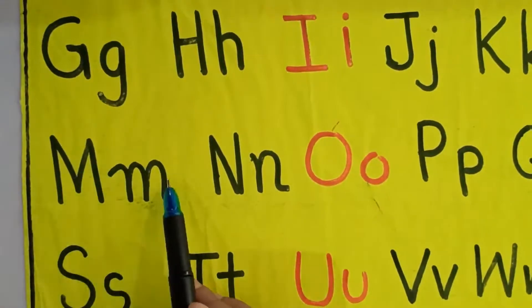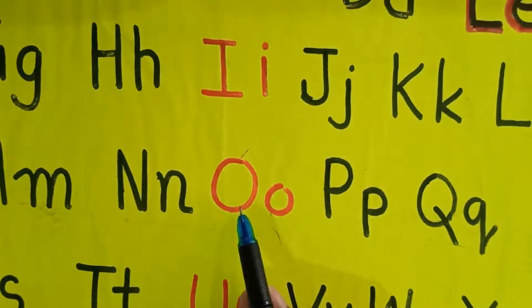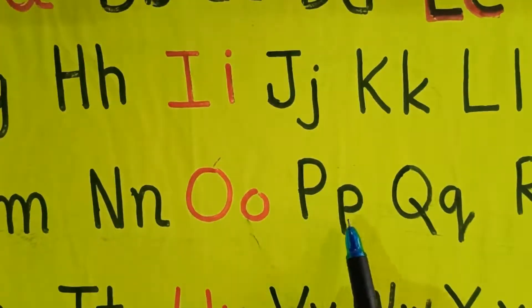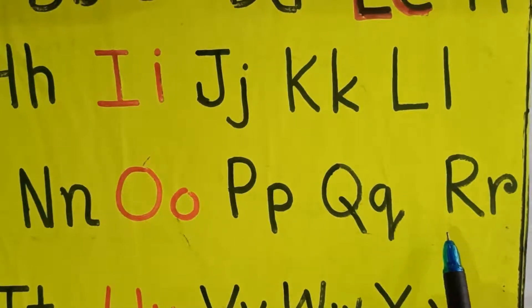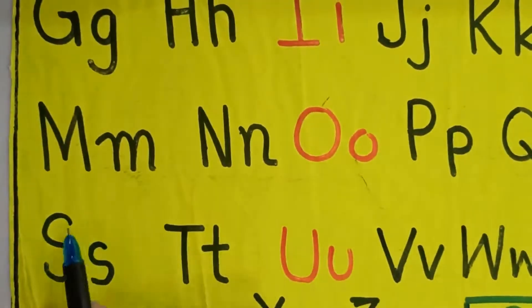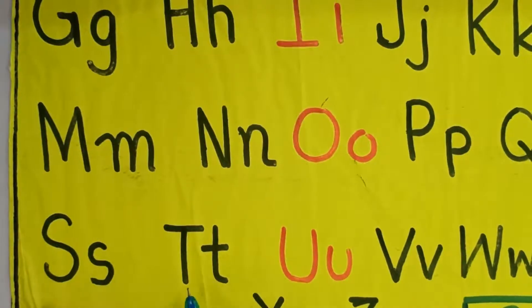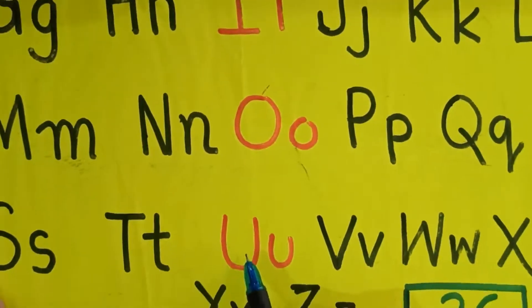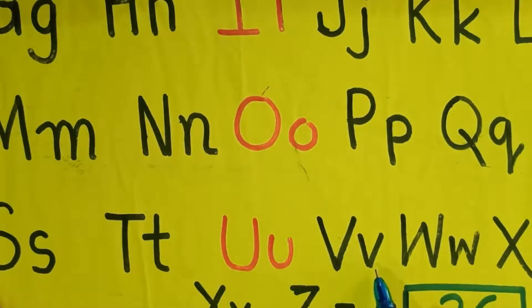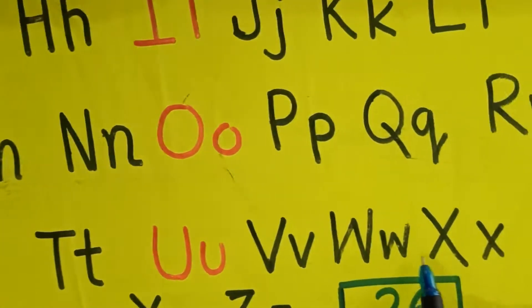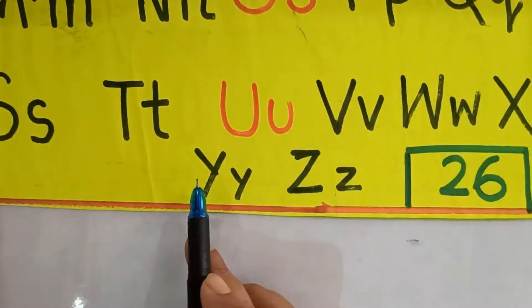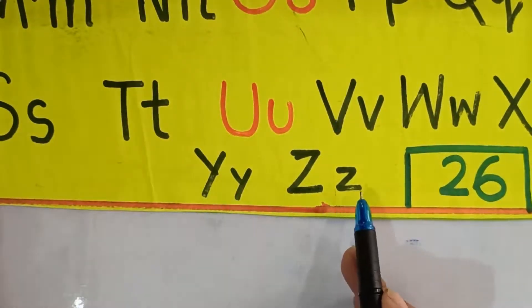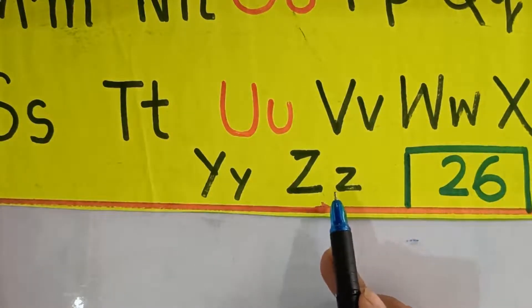M, m. N, n. O, o. P, p. Q, q. R, r, capital small. Then S, s. T, t. U, u. V, v. W, w. X, x. Y, y. Z, z. Z sound will come like z. Total we have 26 alphabet, A to Z.